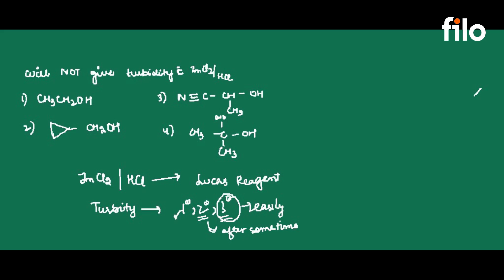But the one degree alcohol does not show any turbidity. Basically, we need to identify the one degree alcohol, and that will not give turbidity. One degree means this option will not give turbidity.